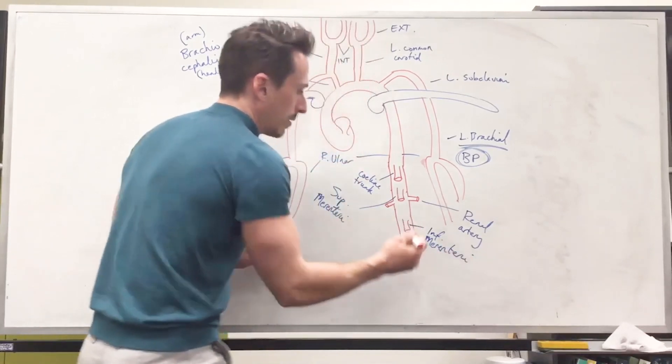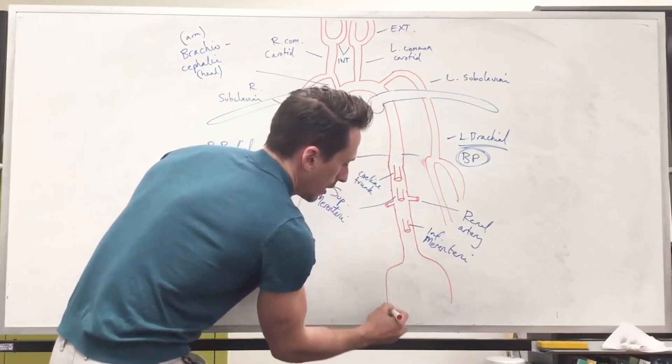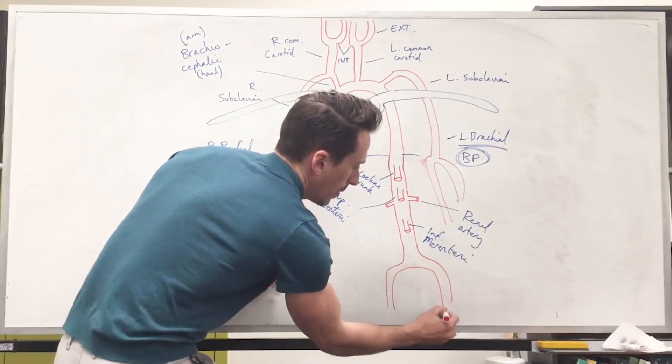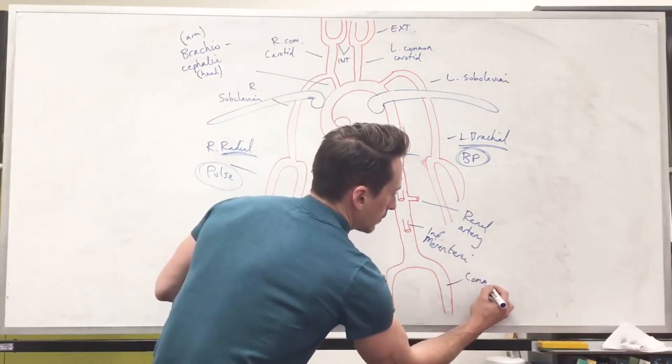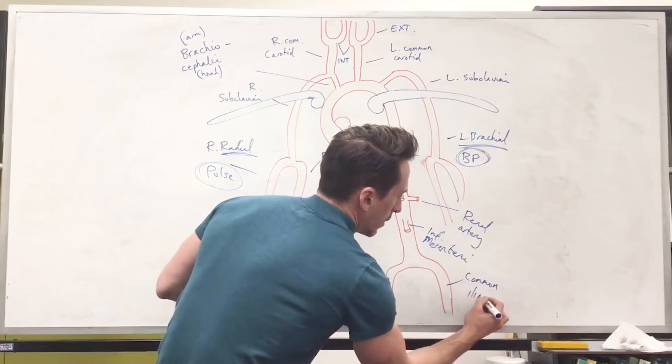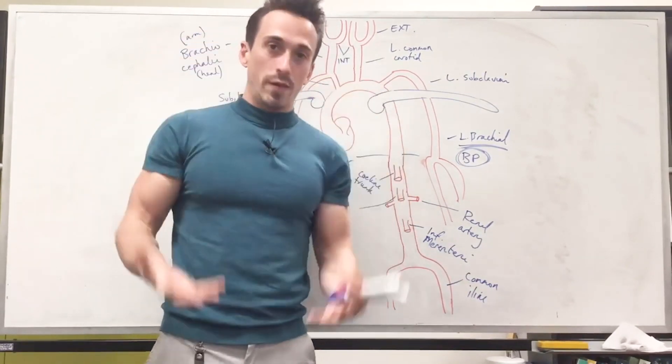Then, as we go even further down, we're going towards the legs now. What we get is some branching off, and now what we're getting is the common iliac arteries, left and right, common iliac. And they're going to have various branches to them, which is going to include the femoral artery.